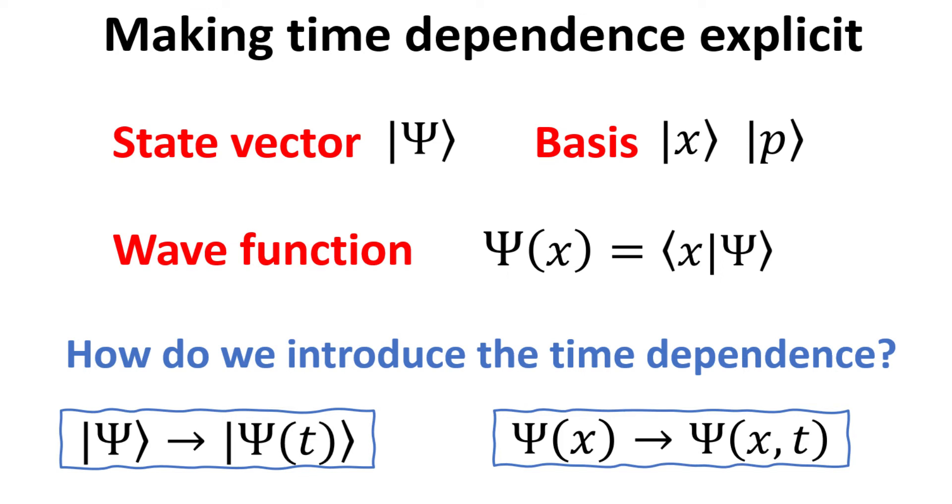As we will learn in other videos, in quantum mechanics, there are different ways of ascribing the time dependence to the various quantum mechanics objects, and we call these the different quantum pictures. In this video, we focus on the so-called Schrödinger picture, where the time variable is being ascribed to the state vector, hence the wave function as shown.